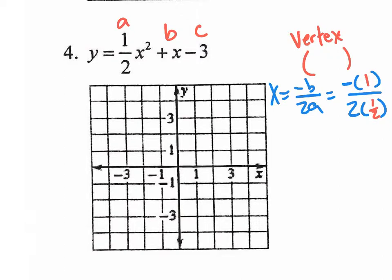And when you do the math here, x is going to equal negative 1 up on top. And the 2 times 1/2, if you do 2 times 1/2, half of 2 is 1. So your x value is simply negative 1. So your vertex x value is negative 1.